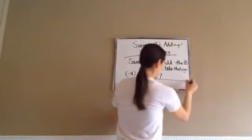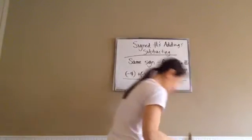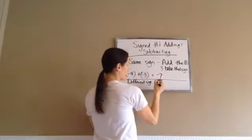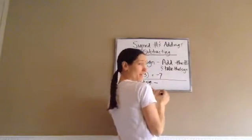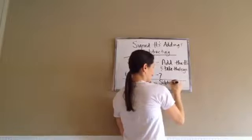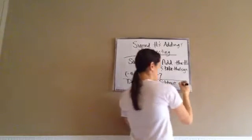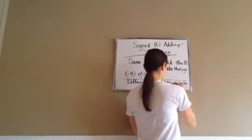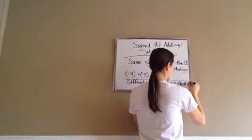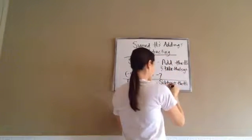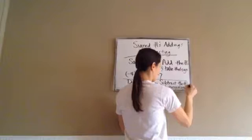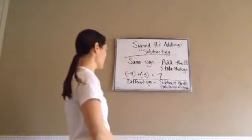Now I'm going to put a line under that one because this next rule is going to be different. If you have different signs — make sure you're writing this down — you are going to subtract. Subtract the numbers and take the sign of the biggest number.